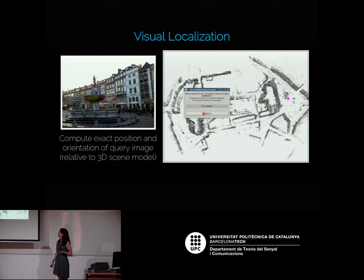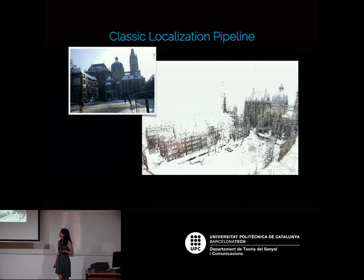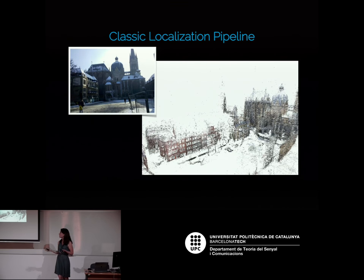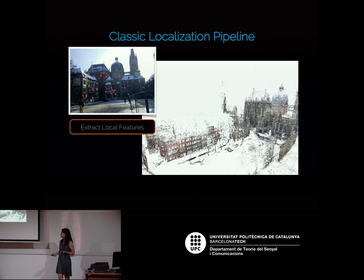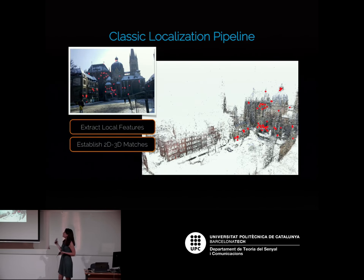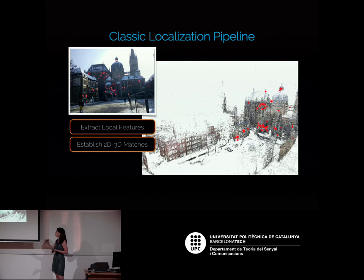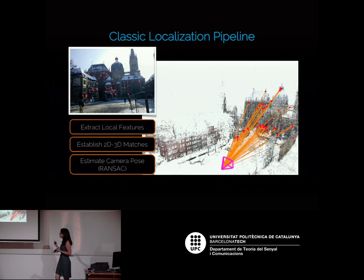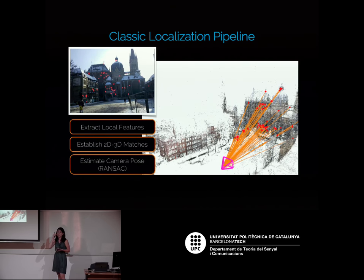This is a hard task for big scenes like full cities or buildings with repetitive structures. Looking at 10+ years of classic research in localization — similar to what was explained — we use local features like SIFT and SURF. First, we compute these features on the query image. Then we establish matches between features in the 2D image and the 3D model. Finally, we estimate the camera pose using RANSAC.